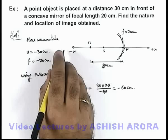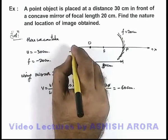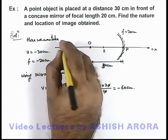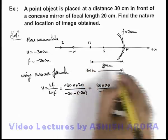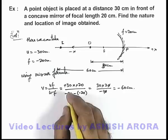this mirror at a distance 60 centimeter. This is the position where image is obtained. The location will be at a distance 60 centimeter from the pole of this mirror.